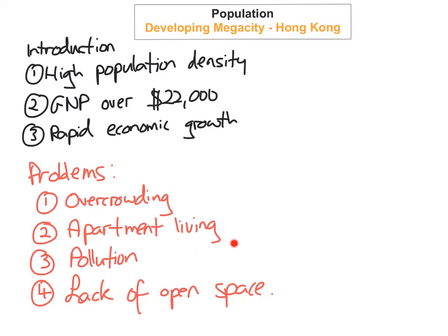For apartment living, there are many many high-rise flats built to house the new people that move into the city. Bed-space apartments are really small, with people sleeping in rows and rows of bunk beds two and three tiers high.